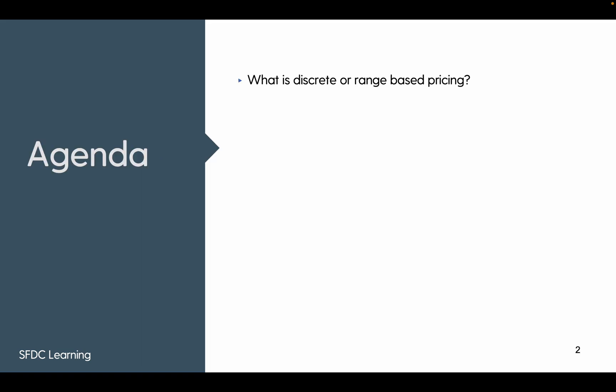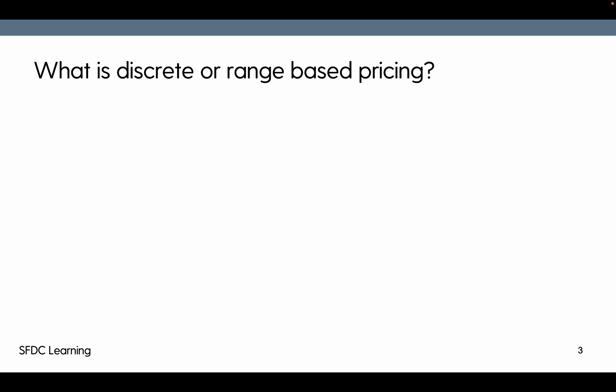Let's explore the agenda. First, we'll see what discrete or range-based pricing is. Then we'll see how to set it up, followed by a use case, and then we'll review the configuration. So, what is discrete or range-based pricing? When a product needs to be priced based on a predefined value, that becomes discrete pricing.